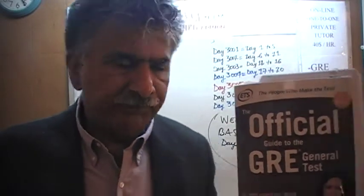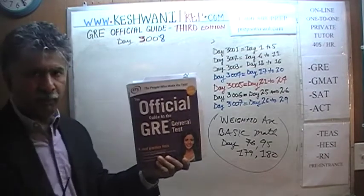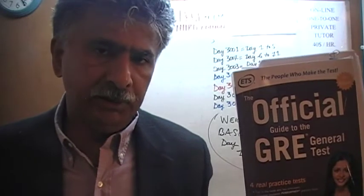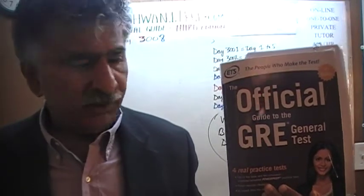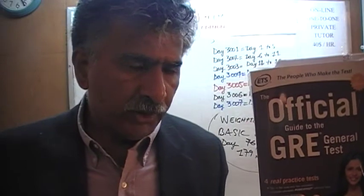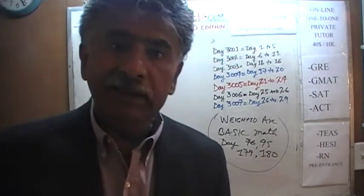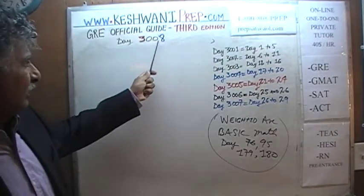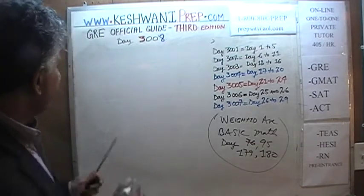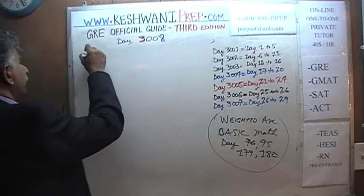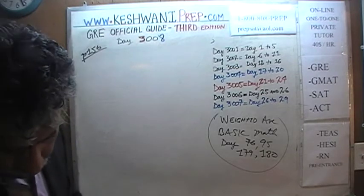Hello, my name is Keshwani — that's K-E-S-H-W-A-N-I. We are here because we want to prepare for the GRE. We have been solving math problems out of this book, the GRE Official Study Guide, the third edition. If you do not own this book already, purchase it immediately — you're going to need it. Today is our lesson number 8, lesson 3008: 3 stands for the third edition, day 8. We are on page 156. Turn to it and we'll begin with problem number 4.